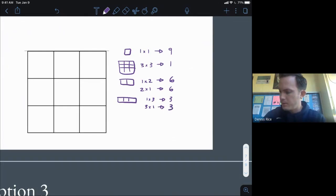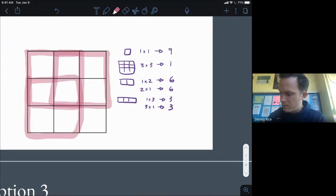One by threes, obviously we have three going horizontally and three going vertically.